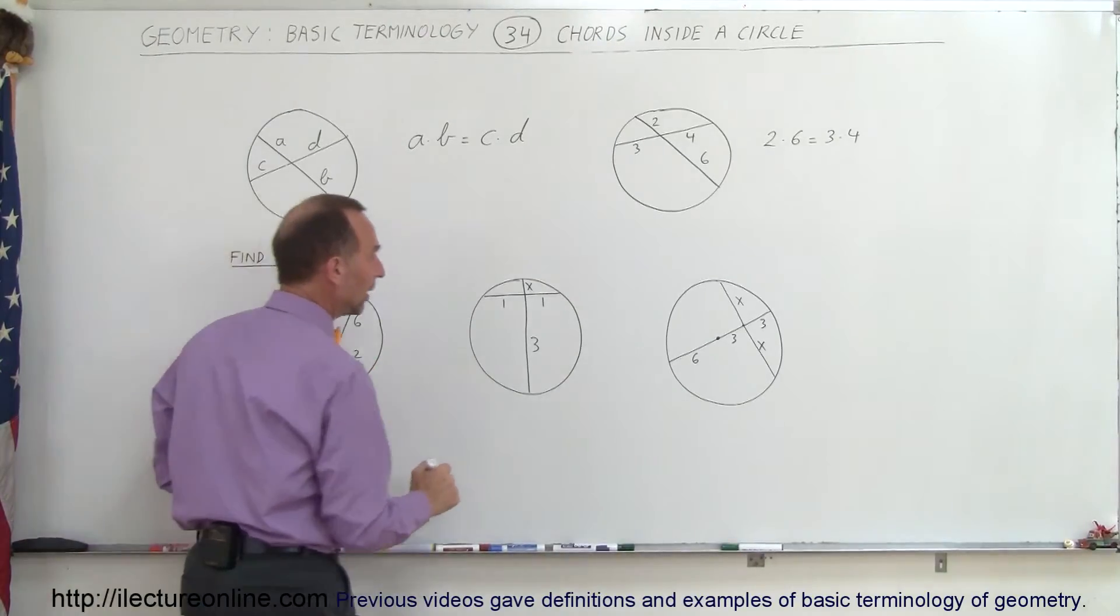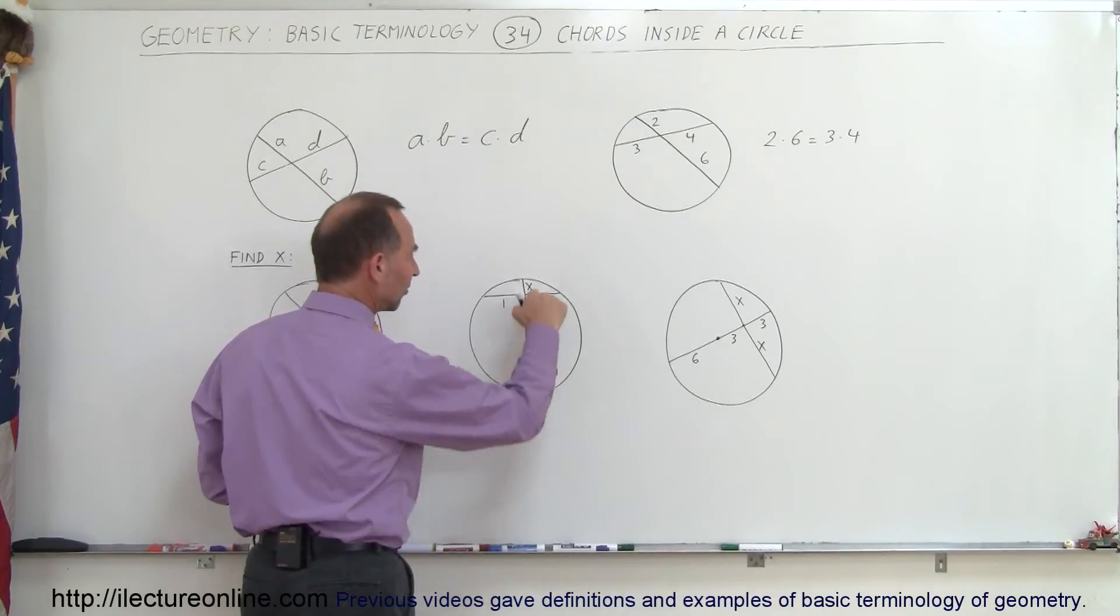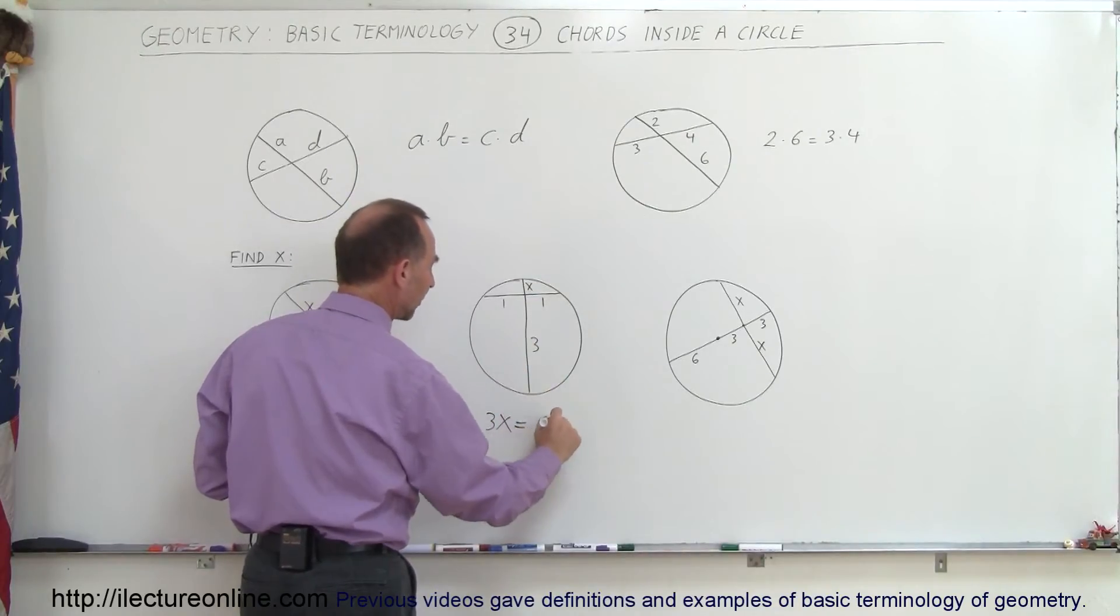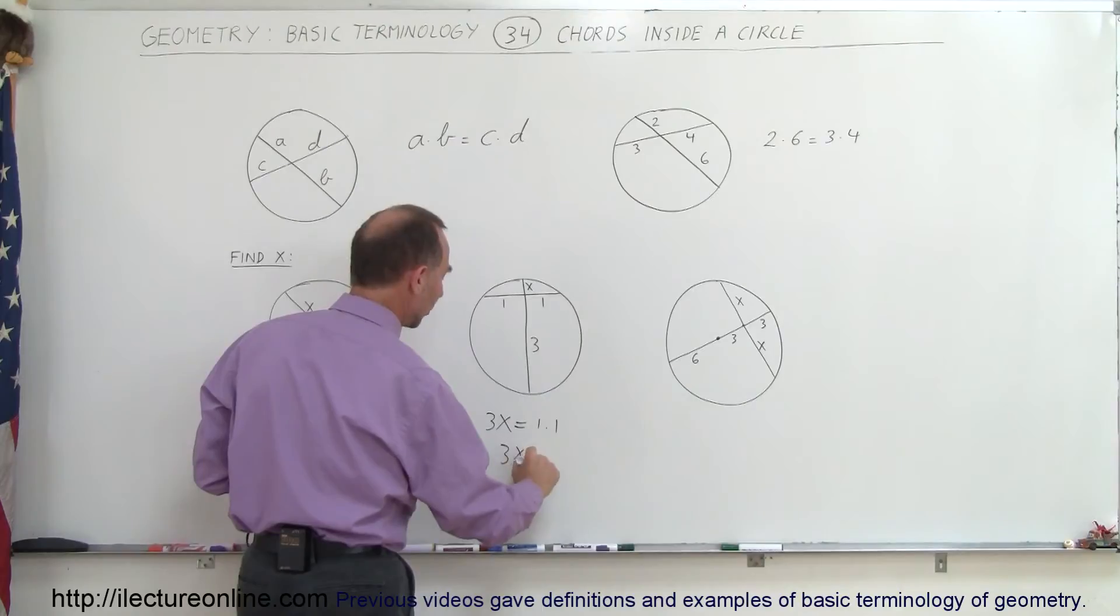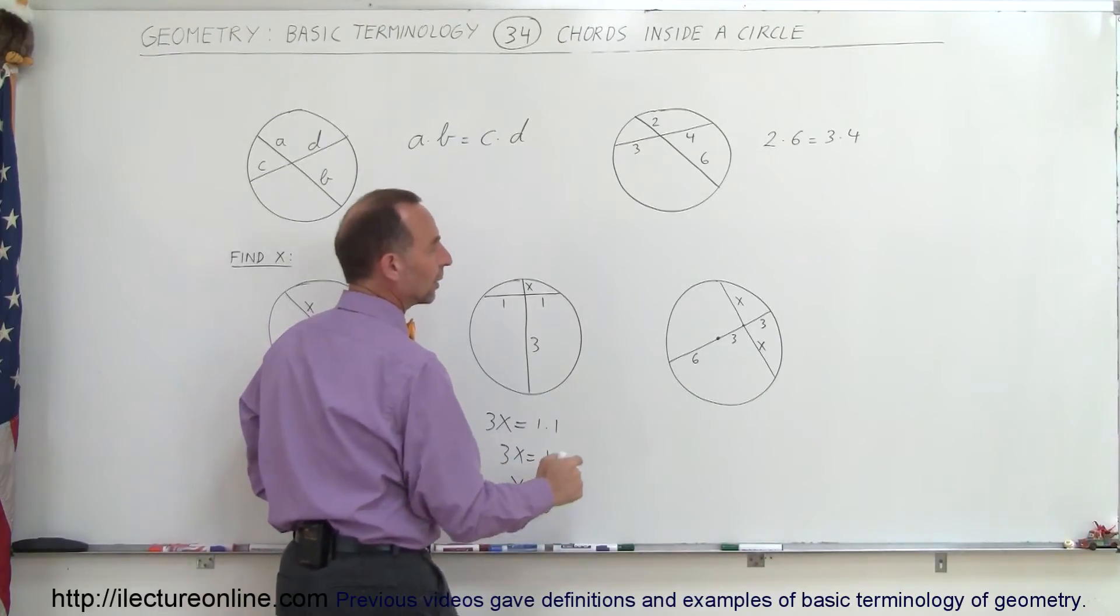Here we can also say that 3 times X, so multiply this distance times X, must equal 1 times 1 or 3X equals 1 or X equals 1 third.